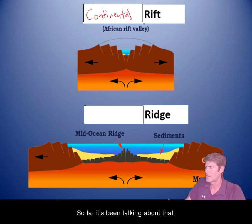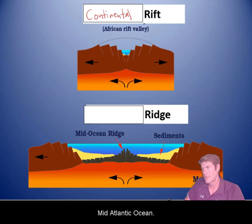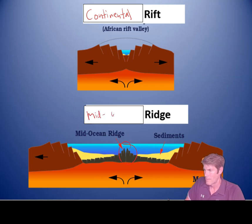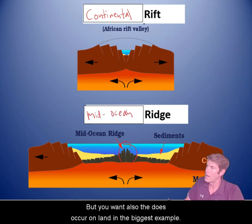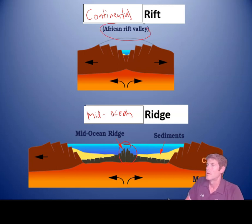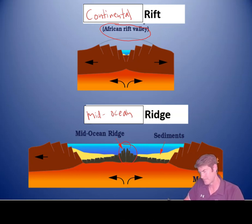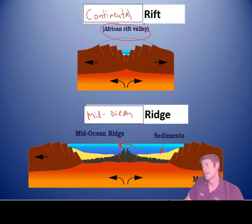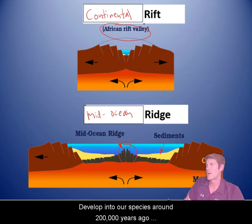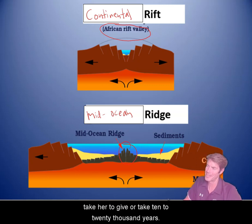So far I've been talking about the mid-ocean ridge, but divergent boundaries also occur on land. The biggest example is the African rift valley going through East Africa — the cradle of humanity, where homo sapiens developed into our species around 200,000 years ago, give or take 10,000 to 20,000 years.